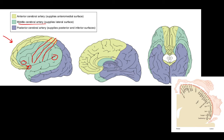If we split the brain in half and look at the interior side, it's almost all anterior cerebral artery. The ACA is responsible for all parts of the motor and sensory cortex that droop over and touch the inside. For the temporal lobe, the middle and posterior cerebral arteries share about 50/50 of the blood supply.